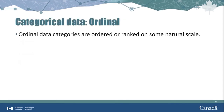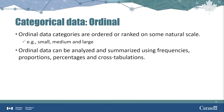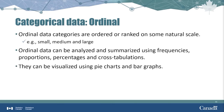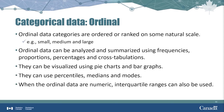Ordinal values represent categorical data that can be ordered. Ordinal data are very similar to nominal data, but, as the name implies, order is important. The categories follow some logical order, such as sizes categorized as small, medium, and large. Similarly to nominal data, ordinal data can be analyzed, summarized, and visualized. However, ordinal data can also be described using percentiles, medians, and modes. If the ordinal data are numeric, interquartile ranges can also be used.